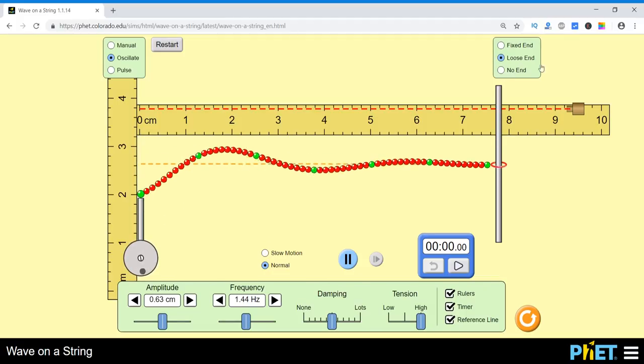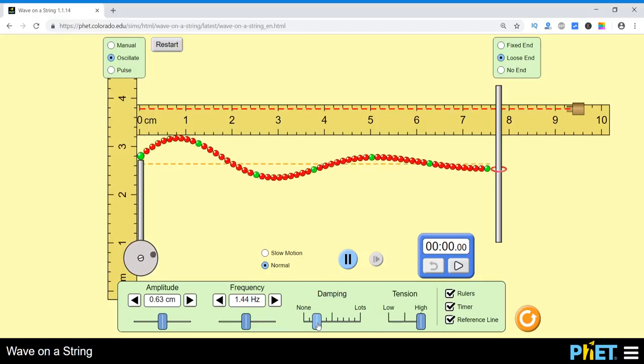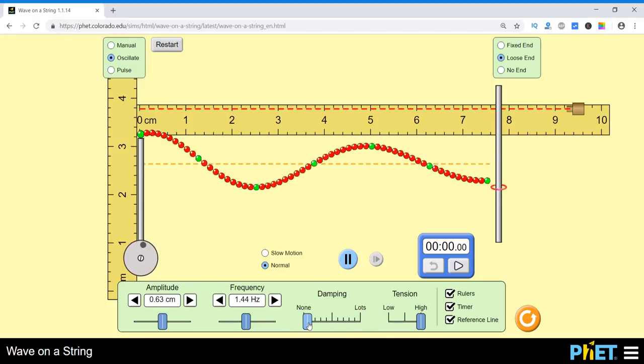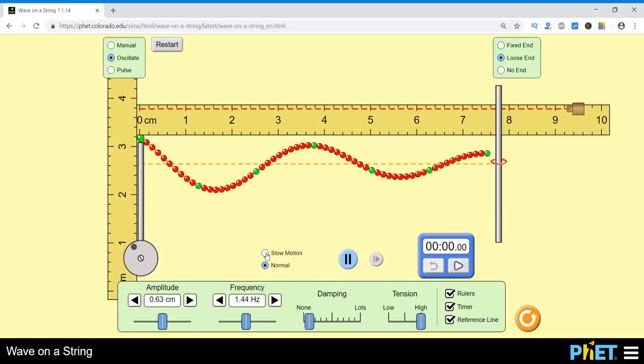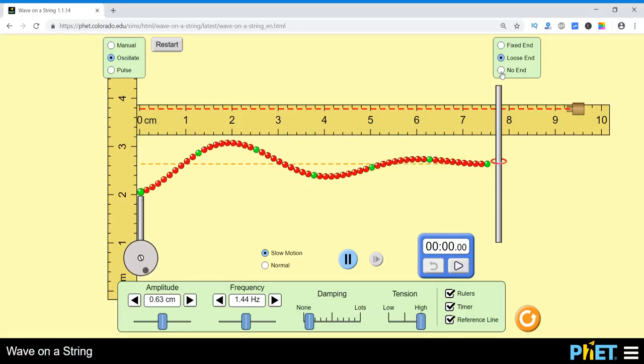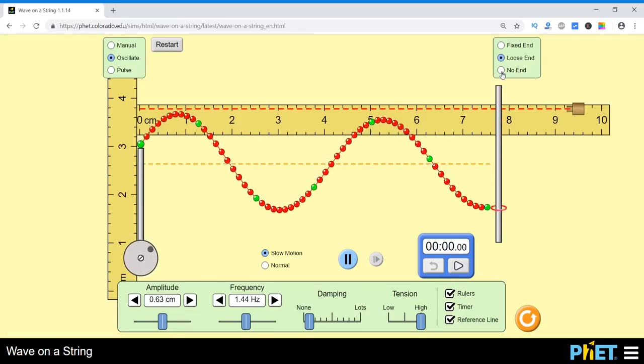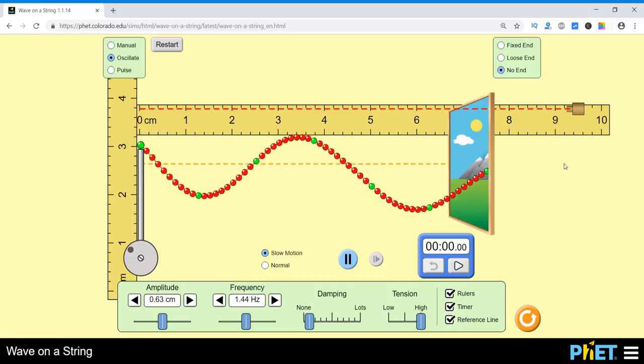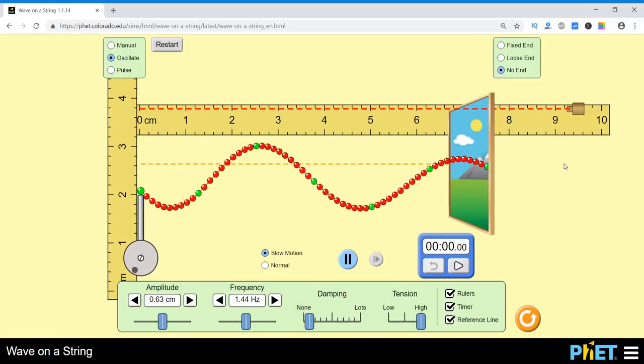Let's change it to no end. It is here loose end and reduce the damping. Let me put it to slow motion. So it is loose end. Now let's see what happens for the condition of no end. This is no end case.